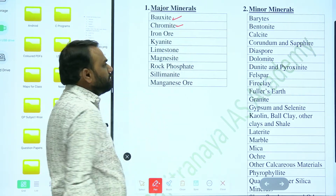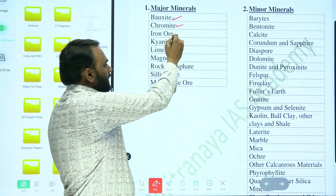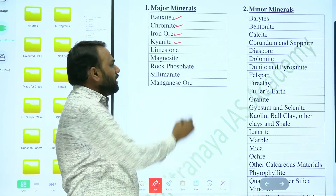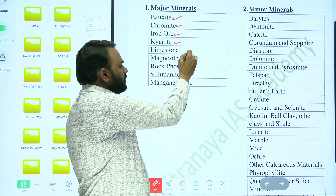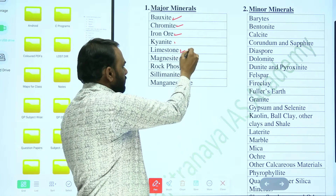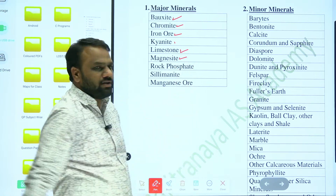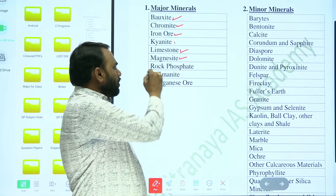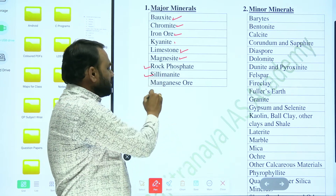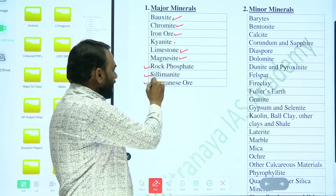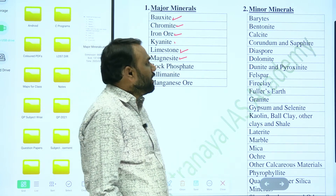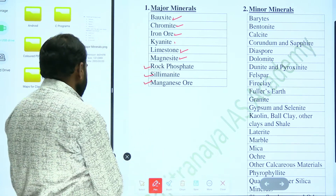chromite, iron ore, kyanite, limestone, magnesite, rock phosphorus, silimanite, and manganese ore. And in case of minor minerals,